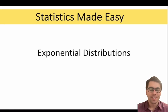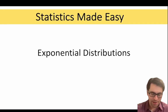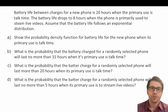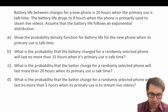In this video we're going to continue our discussion of exponential distributions with a few more worked examples, so let's go ahead and dive right in. Battery life between charges for a new phone is 20 hours when the primary use is talk time. The battery life drops to 8 hours when the phone is primarily used to stream live videos. Assume that the battery life follows an exponential distribution.